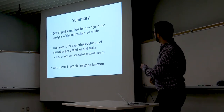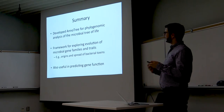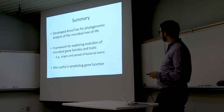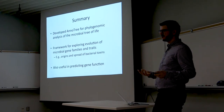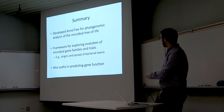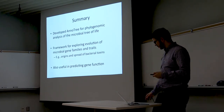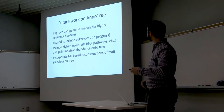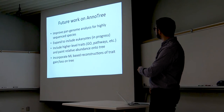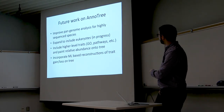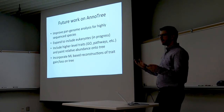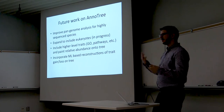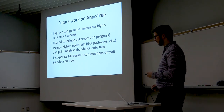In summary, we've developed a new resource called AnnoTree for phylogenomic analysis of the microbial tree of life — a new framework for exploring the evolution of microbial gene families and traits, such as the origins and spread of toxins, virulence factors, and antibiotic resistance genes. It is also potentially useful in predicting gene function. For future work, we want to improve pan-genome analysis for highly sequenced organisms, expand to eukaryotes, include additional annotations like GO and other pathways, look at relative abundance, gene duplications, and better incorporate likelihood reconstruction for sensitive mapping of gains and losses on the tree.